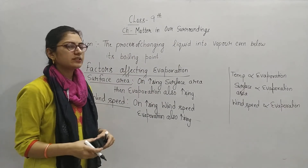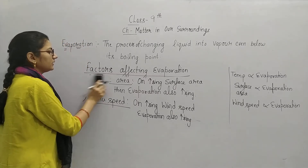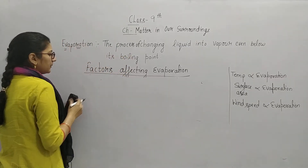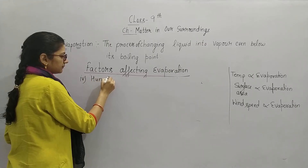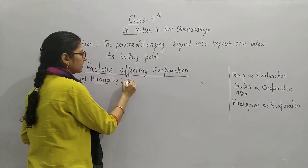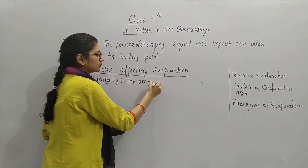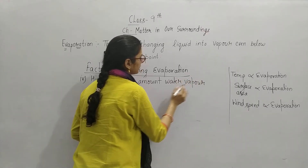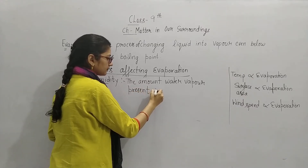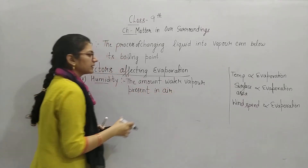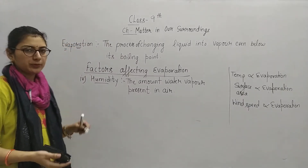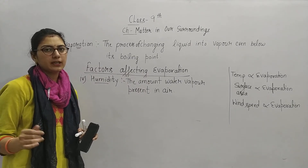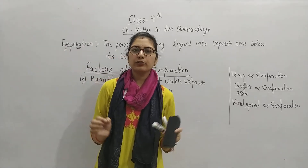तो हमने three factors पढ़े — temperature, surface area, and wind speed. अब हम fourth देखते हैं जो factor affect करता है — fourth है आपका humidity. Humidity क्या होता है? The amount of water vapor present in air. Air के अंदर water vapor का कितना amount है, वो क्या होता है — humidity. अब आप सोचिए कि बाहर humid कब होता है — rainy season में.